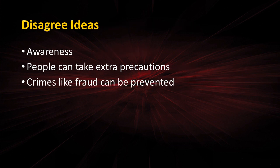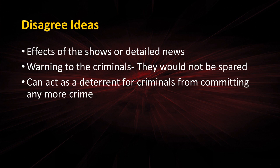The disagree ideas are: people become more aware and can take extra precaution. Crimes like fraud can be prevented if the news about the crime is given in detail. For example, online fraud where criminals ask for passwords — victims who don't know better can suffer financially. This kind of crime can be prevented in the future if details are shown on TV or described in the newspaper. Also, detailed news can act as a warning to criminals that they will not be spared and the police will always find them.